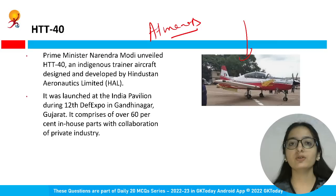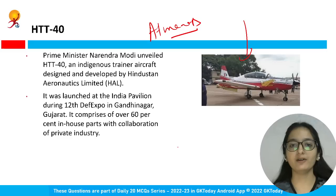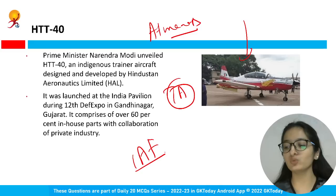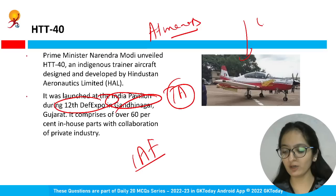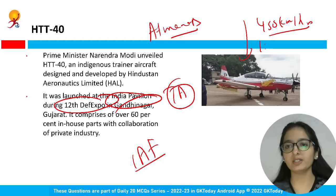HTT-40 comprises 60 percent in-house parts in collaboration with private industry, reflecting Atma Nirbharata. It also has export potential, as the Prime Minister mentioned. It is a trainer aircraft developed as per IAF requirements for new pilots to train before using more advanced aircraft. It was launched during the 12th Defence Expo held in Gandhinagar. Maximum speed is 450 km/h and maximum range is 1000 km.